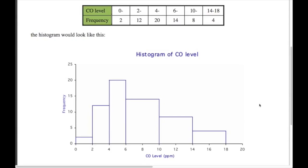This looks good — we've got a title, the axes are labeled, and we've got a smooth scale along the bottom from 0 through to 18. We don't label the individual bars like '0 to 2' etc., we just have a smooth scale going along. Here's the problem.